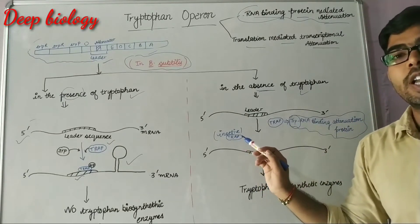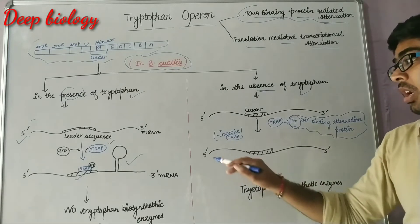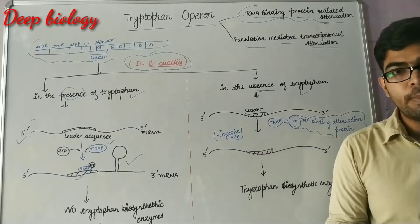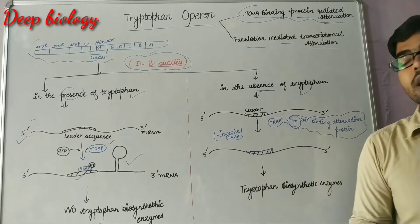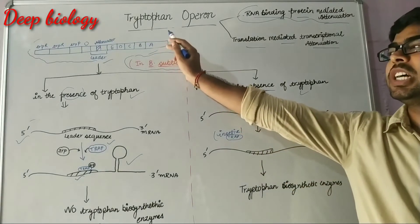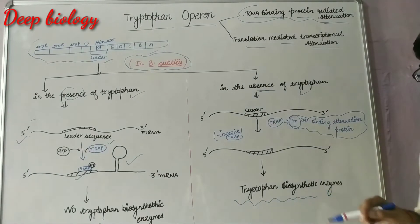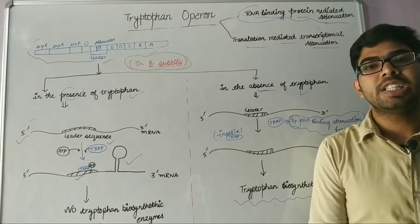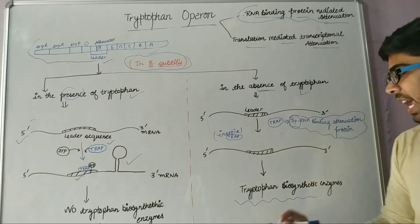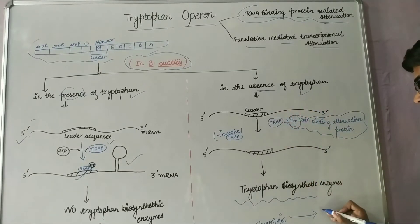This TRAP protein cannot bind to the leader sequences and there will be no formation of stem loop. That's why RNA polymerase will proceed further and leads to the expression of structural genes. There will be synthesis of tryptophan biosynthetic enzymes and tryptophan is synthesized from chorismic acid by means of these five enzymes.